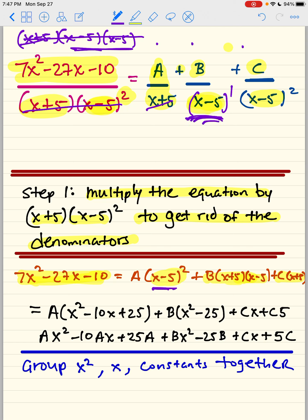One of the x minus 5s cancels out. You're left with an x plus 5, x minus 5 here. Both x minus 5 squares get canceled out, so you're left with an x plus 5. So that's where I got this from.